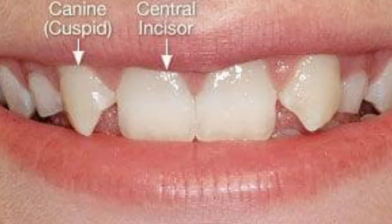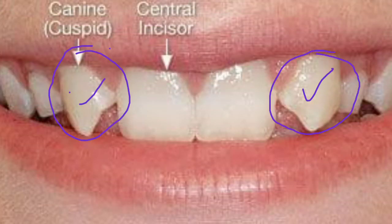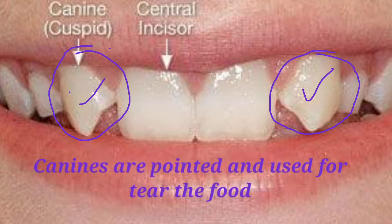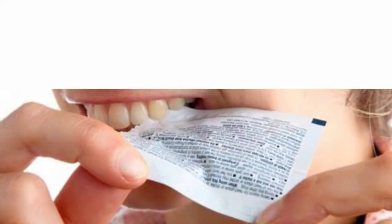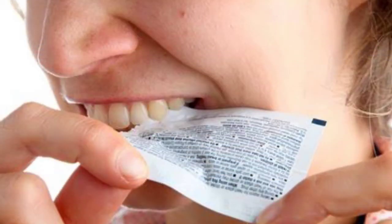On either side of the incisors, canines are present. These are sharp and pointed teeth, mainly used for cutting and tearing food. Whenever you want to tear a chips packet with your teeth, you are using these sharp ones — the canines. You can see them in this picture.